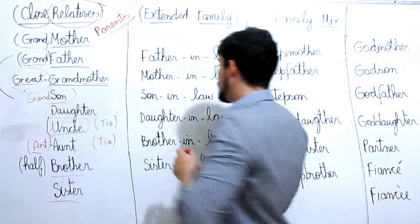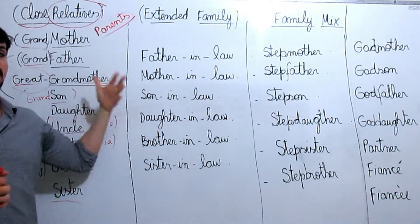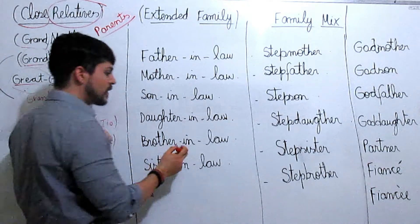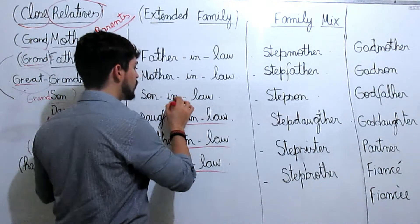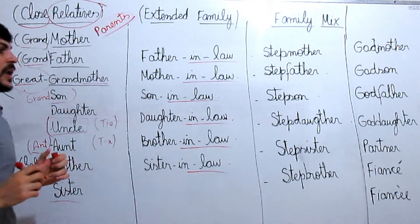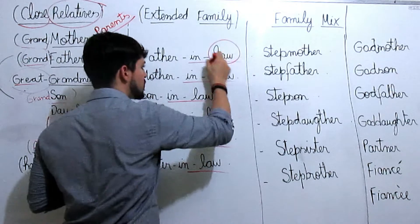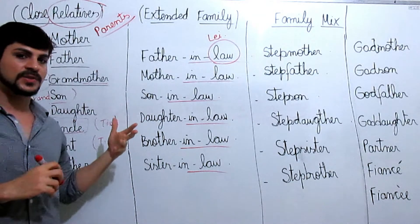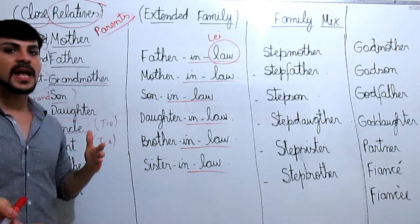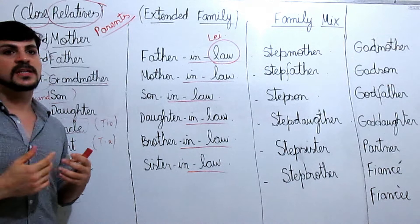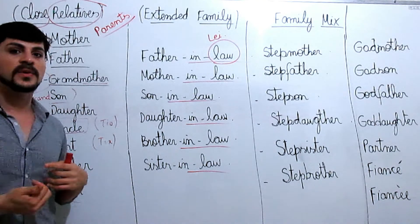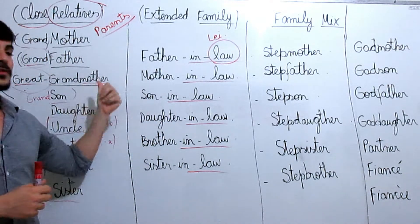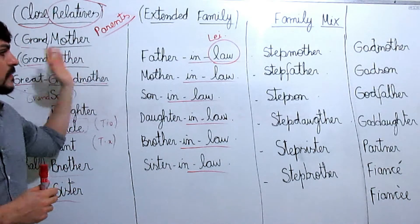We have here a more extended family. In particular, I call this the in-law group. If you observe, all these relatives have the ending 'in-law.' Separately, 'in-law' means 'lei' — law. So these relatives are those who become your relatives by law after a marriage. For example, it is very common for mothers-in-law to say they gained a second son when their daughter got married — that son became theirs by law. So we return to the close relatives words and build on them.